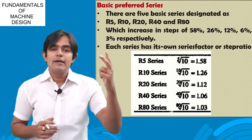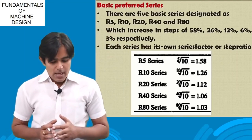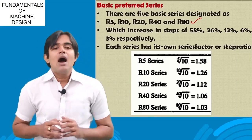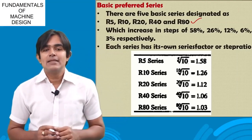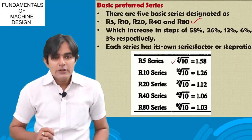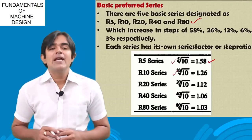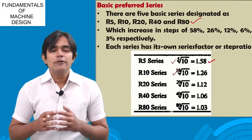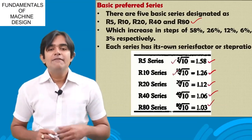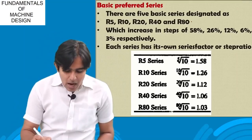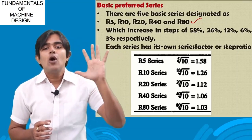There are two series: the basic series and the derived series. The basic series consists of R5, R10, R20, R40, and R80. The 5th root of 10 gives 1.58, the 10th root of 10, 20th root of 10, 40th root of 10, and 80th root of 10 each give a geometric progression step ratio. These five are called the basic series.